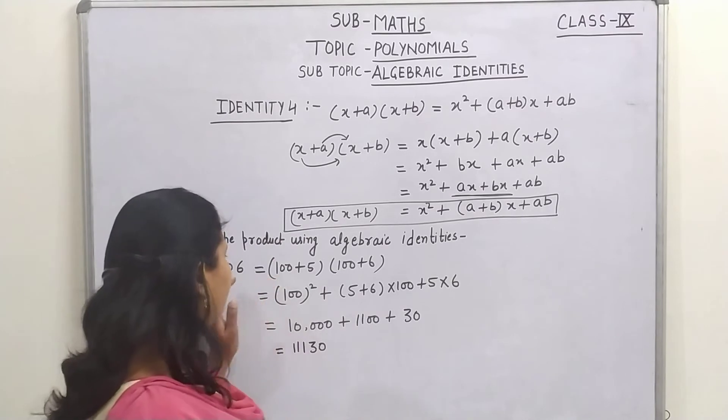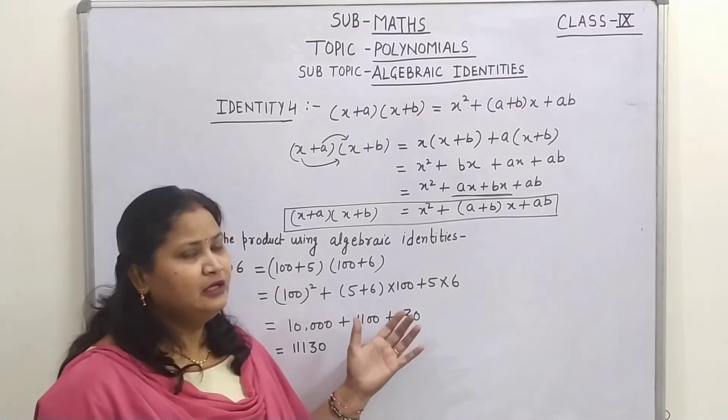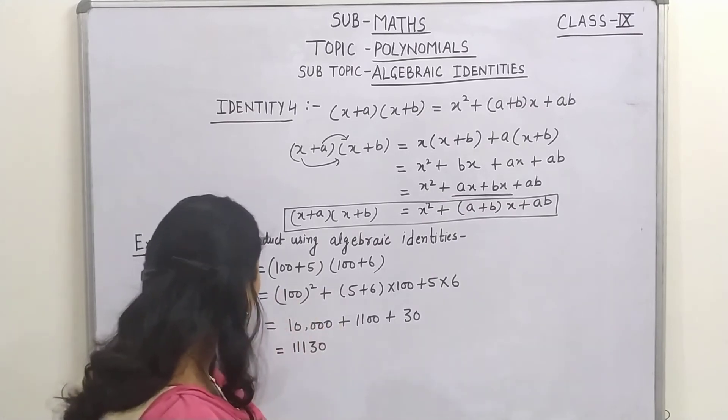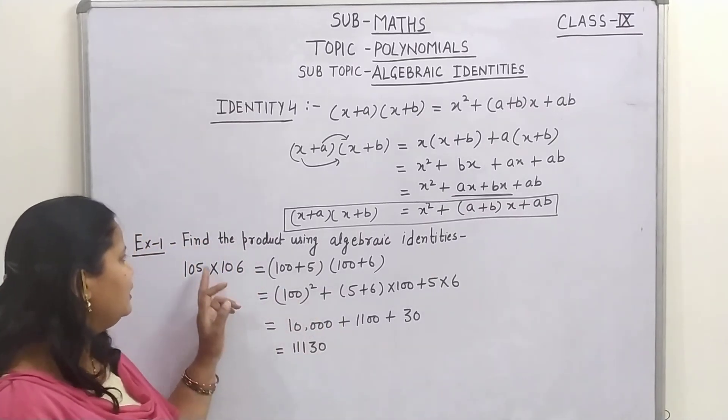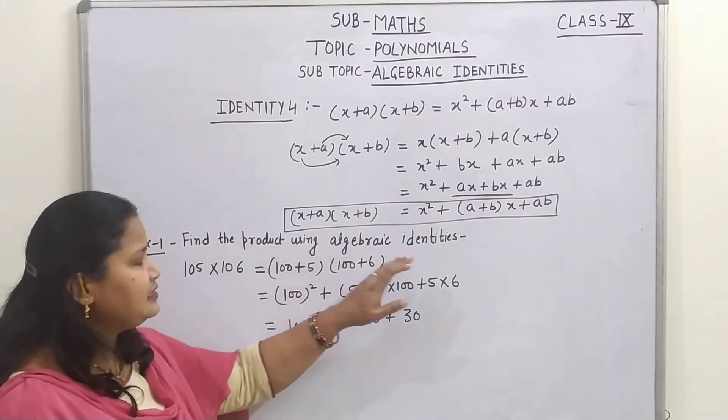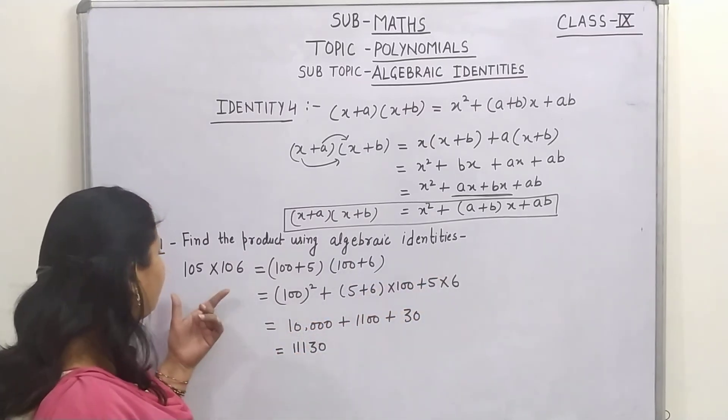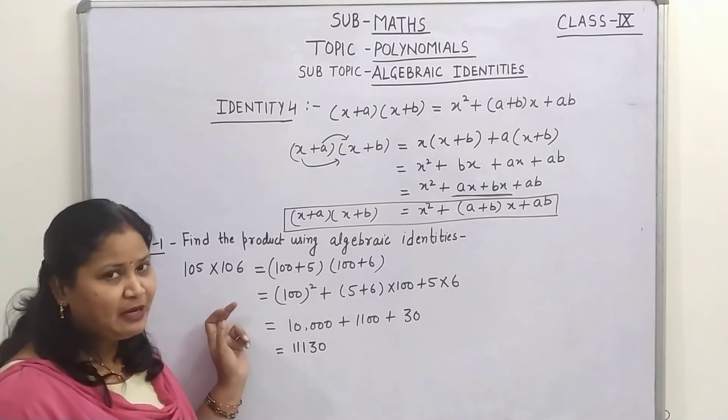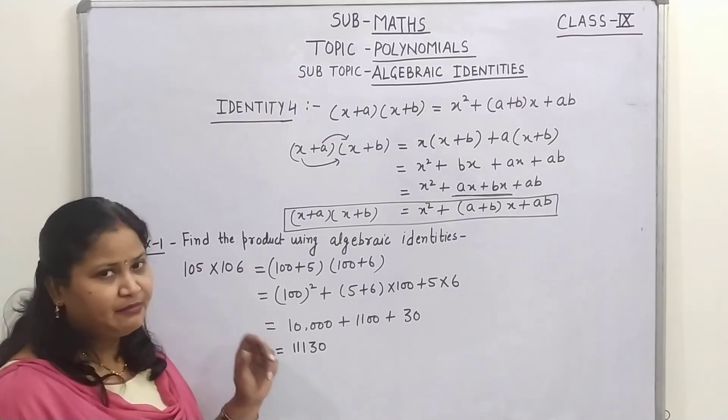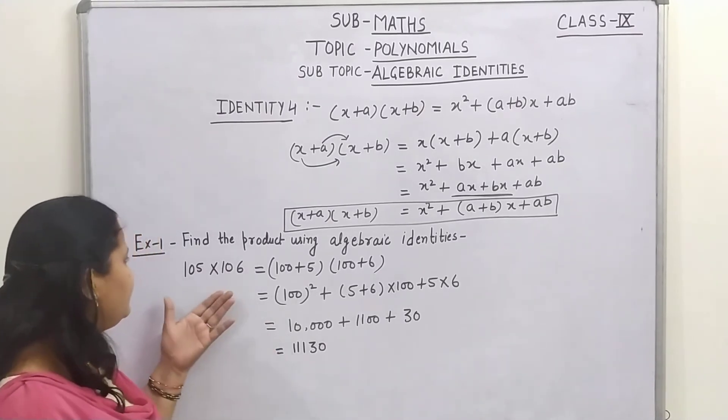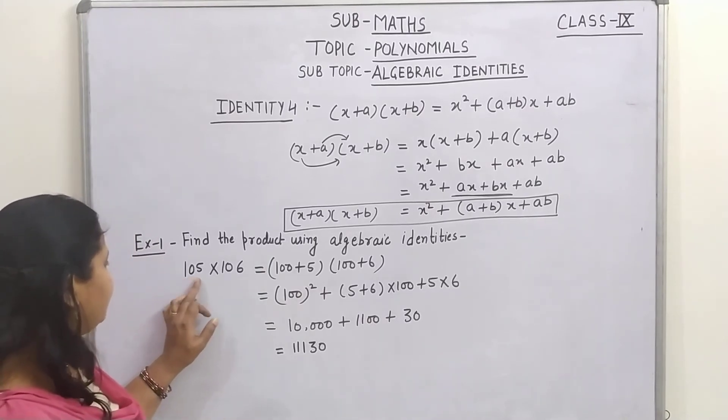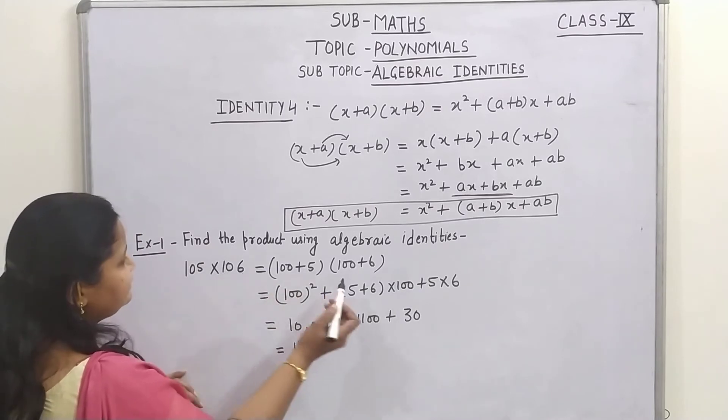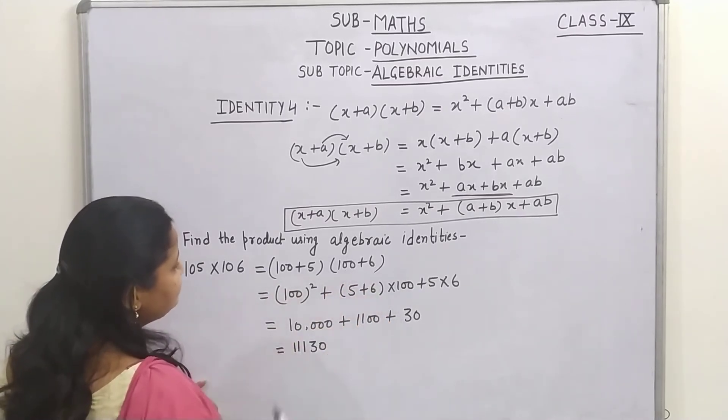Now children, I am telling you how to use this identity to solve our problems. There is an example in your NCERT book, find a product using algebraic identities, we have to find a product of 105 and 106 without multiplying by using algebraic identities only. So first of all, we can write 105 as 100 plus 5 and 106 as 100 plus 6.